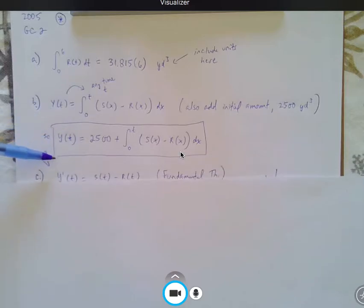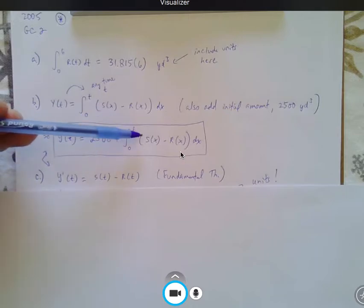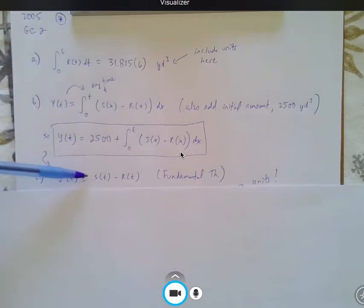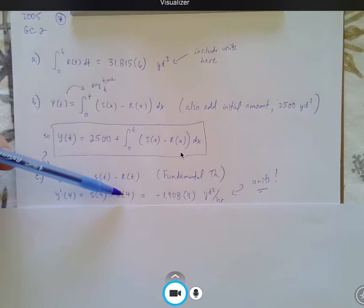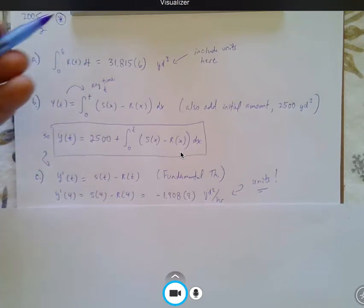And then, of course, the derivative by the fundamental theorem is substituting the upper limit into the integral, which is why Y prime of T is S of T minus R of T. And that should take care of part C, because that question is, what is the rate of change at time 4? So keep in mind, the rate of change at time 4 is the amount of sand being put onto the beach minus the amount of sand being taken away.